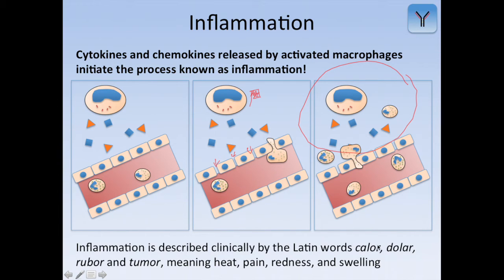The word inflammation comes from the Latin words calor, dolor, rubor, and tumor — meaning heat, pain, redness, and swelling. This will sound very familiar: if you get infected in any area, that area gets really hot, sensitive to pressure (pain), red, and swollen. If it has a cut, pus might come out — essentially clear liquid full of white blood cells, neutrophils, and macrophages. That's what inflammation really is — what's happening inside your skin when you have an infection.